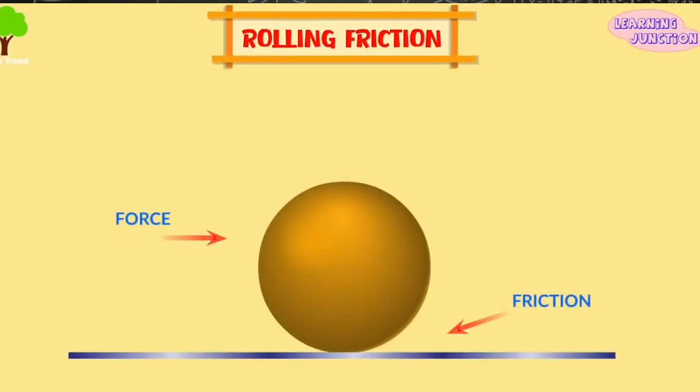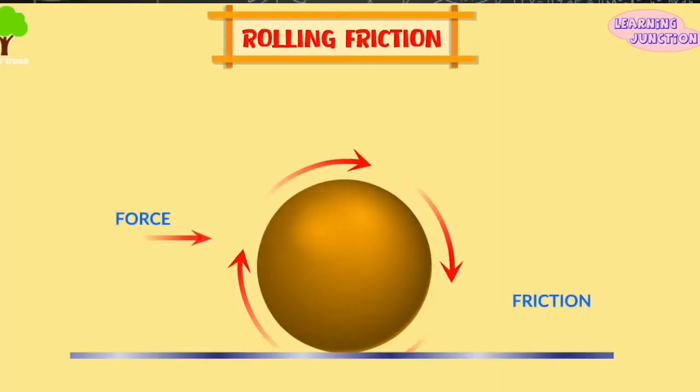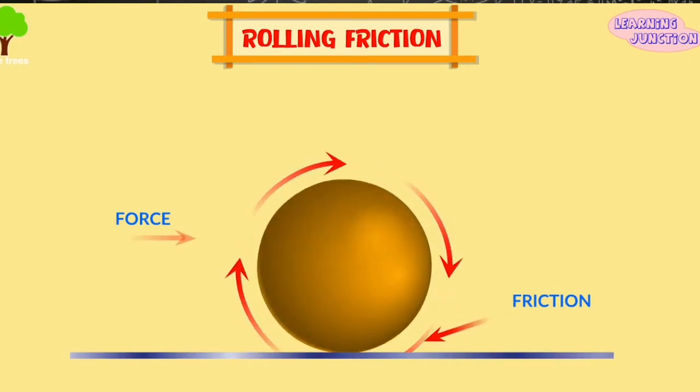Rolling friction occurs when an object rolls over a surface, such as rolling car tires and a rolling ball.